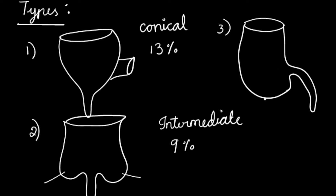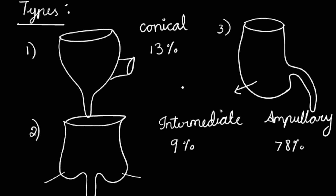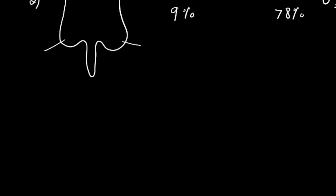The third type is called the ampullary type. This is the most common type of cecum, seen in 78% of individuals. The right cecal pouch is more prominent than the left, and the appendix shifts to the posteromedial aspect. In the conical type the appendix hasn't traveled; in the intermediate type it is between the pouches; in the ampullary type the appendix has completely moved to the medial wall. This is an important MCQ question.